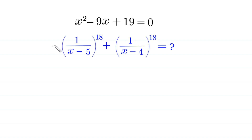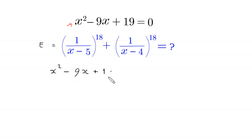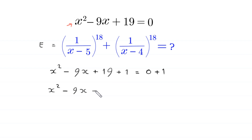Let's suppose that this expression is equal to e. From the equation x squared minus 9x plus 19 equals 0, we add 1 to both sides. This becomes x squared minus 9x plus 19 plus 1 equals 1, so x squared minus 9x plus 20 equals 1.